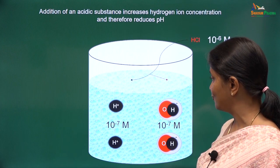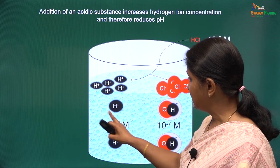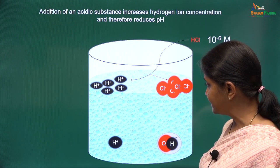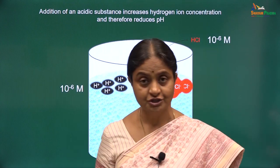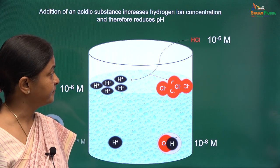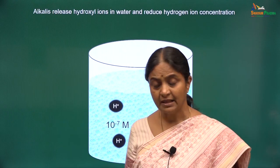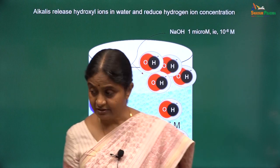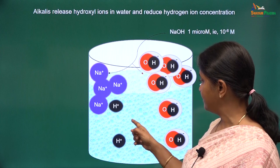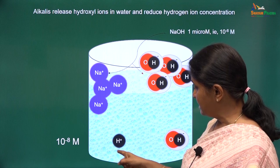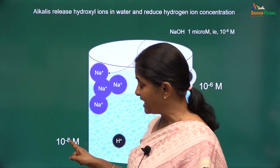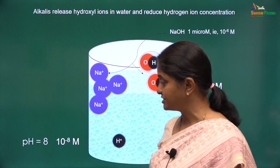Say we have added hydrochloric acid to a liter of water. It ionizes to give protons and chloride ions. Since the hydrogen ion concentration has gone up, some of the ionized water molecules move to the stable state, and the new concentrations of protons and hydroxyl ions are such that their product remains 10⁻¹⁴. If you add sodium hydroxide, it ionizes to give sodium and hydroxyl ions. The hydrogen ion concentration is reduced from 10⁻⁷ molar in water to 10⁻⁸ molar after addition of sodium hydroxide. The pH is now 8.